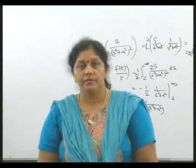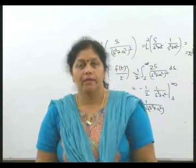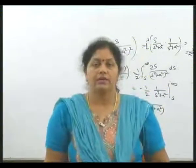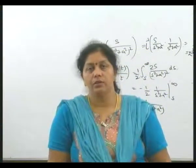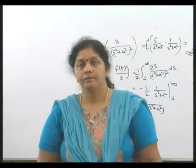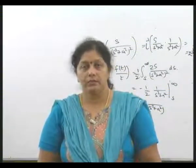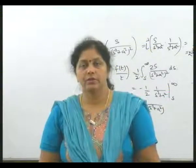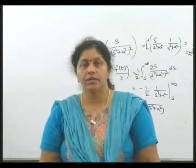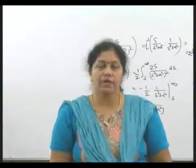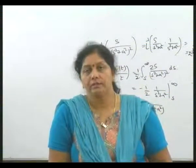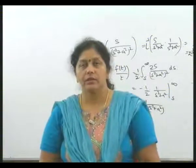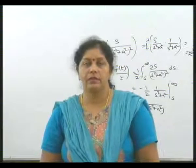So the integral becomes 1 by 2a times the integral from 0 to t of sin(at) du plus sin(2au - at) du. The first part gives 1 by 2a times t sin(at), since sin(at) is constant with respect to u. The second part integrates to minus 1 by 4a² times cos(2au - at), evaluated from 0 to t.